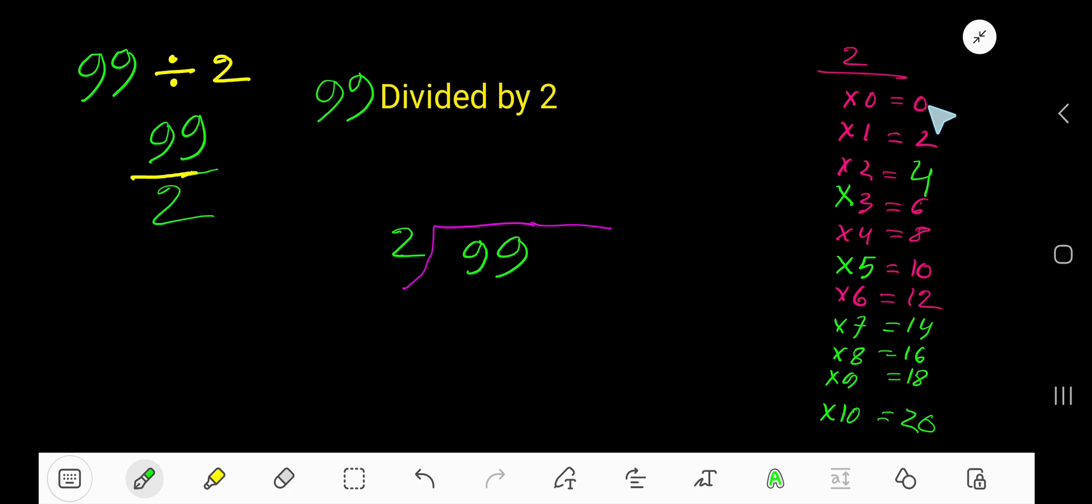Easily just add 2 with the previous step. 0 plus 2 is 2, 2 plus 2 is 4, 4 plus 2 is 6, 6 plus 2 is 8, 8 plus 2 is 10, 10 plus 2 is 12. 2 goes into 9 how many times?